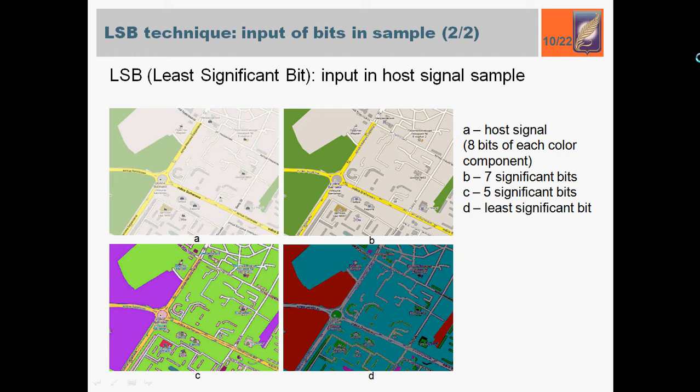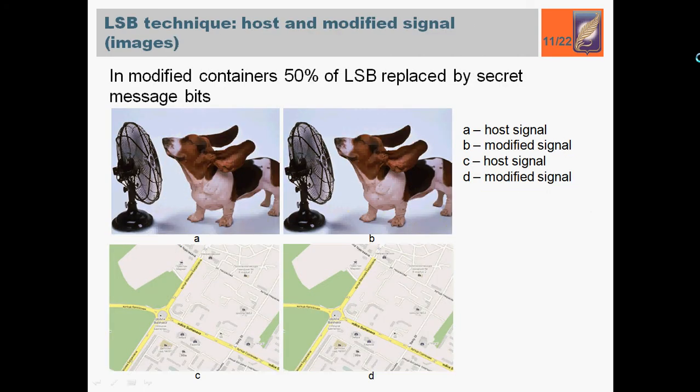Using the LSB technique in host signal, the secret message was embedded. Nearly 50% of the host signal least significant bits were replaced one after another. The format of the secret message was Microsoft Word file. The perception of the modified signal, shown in pictures B and D, is the same as for host signal, shown in pictures A and C.